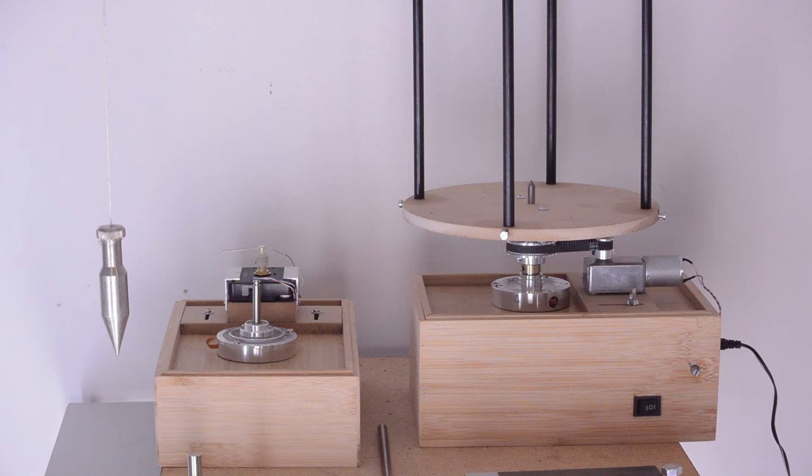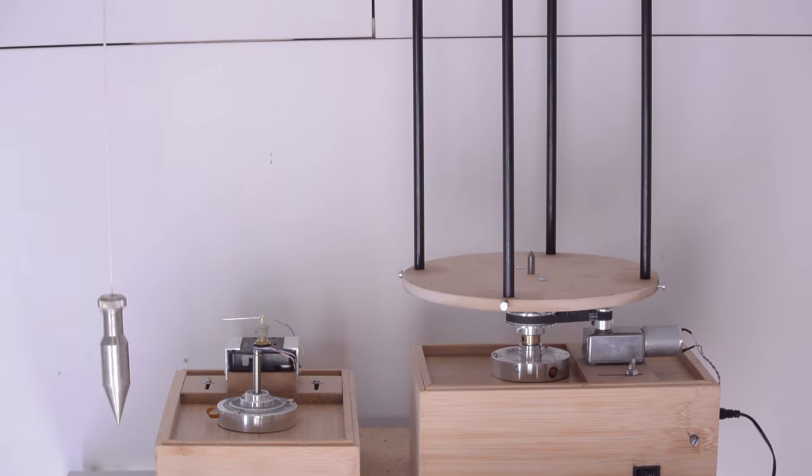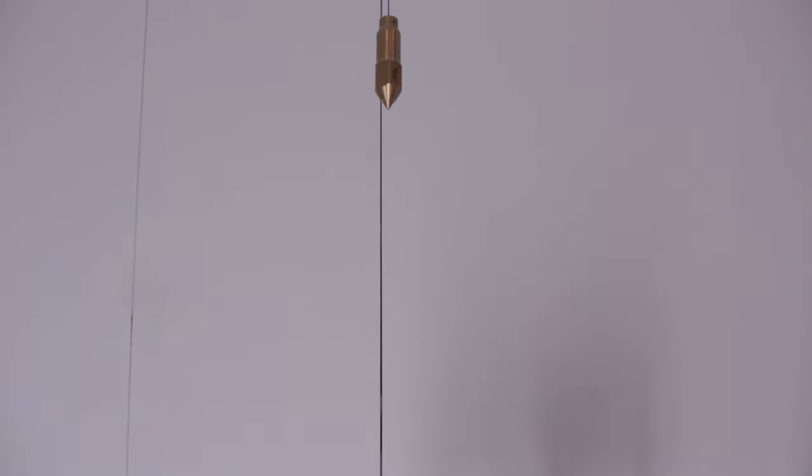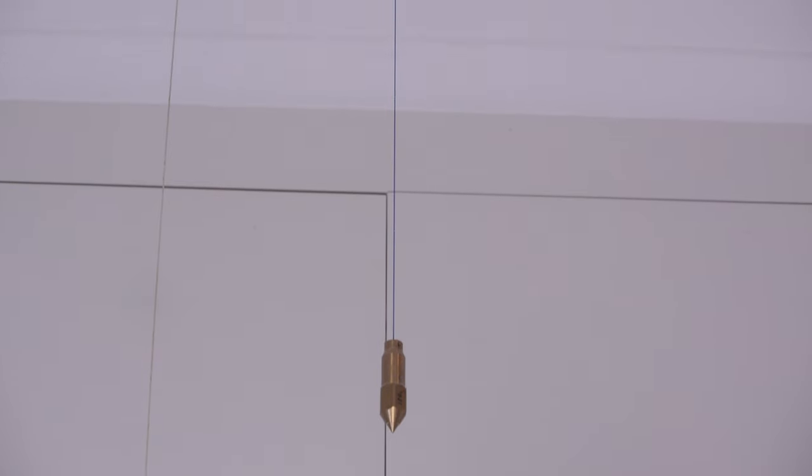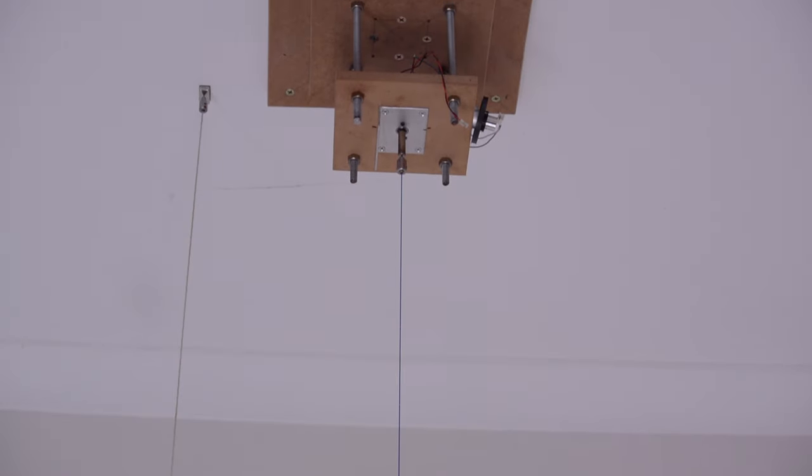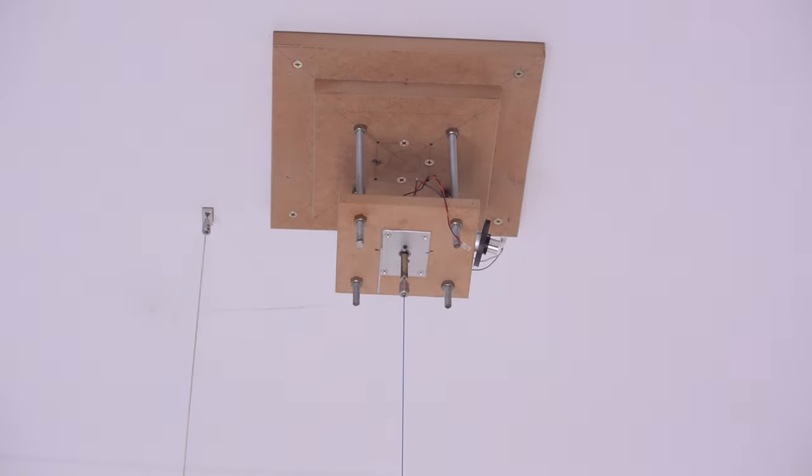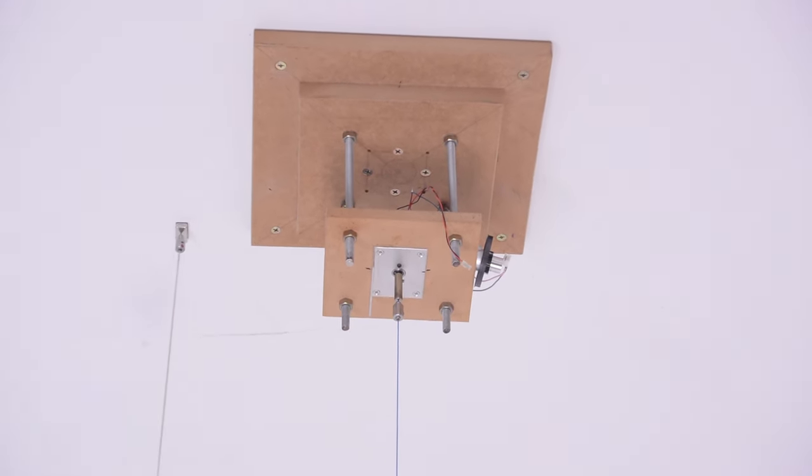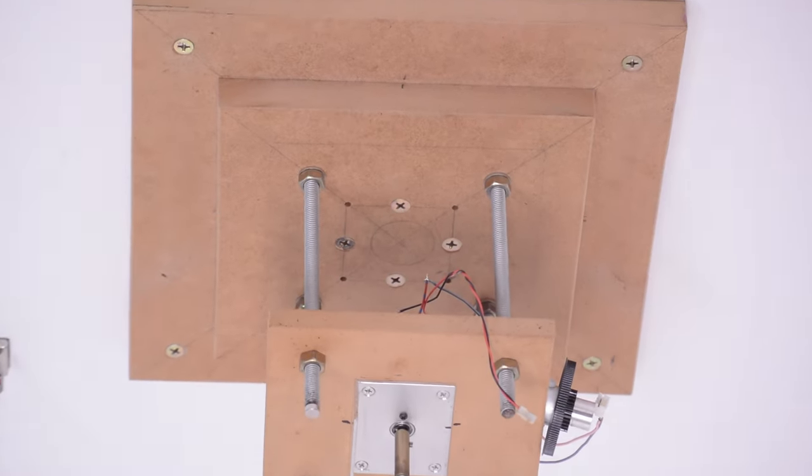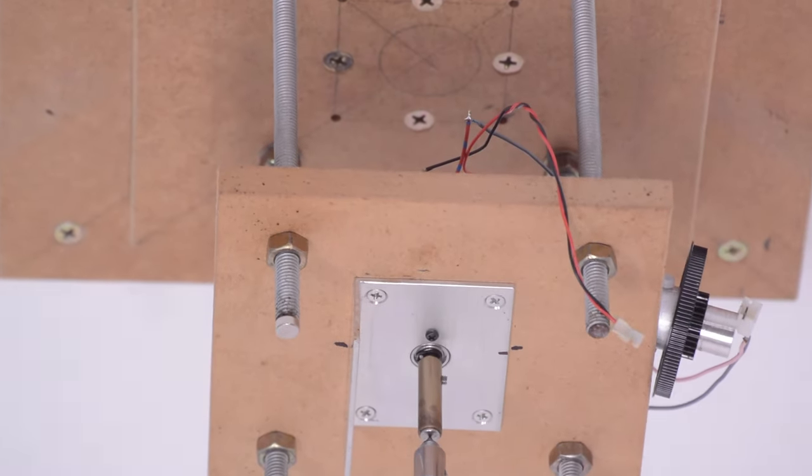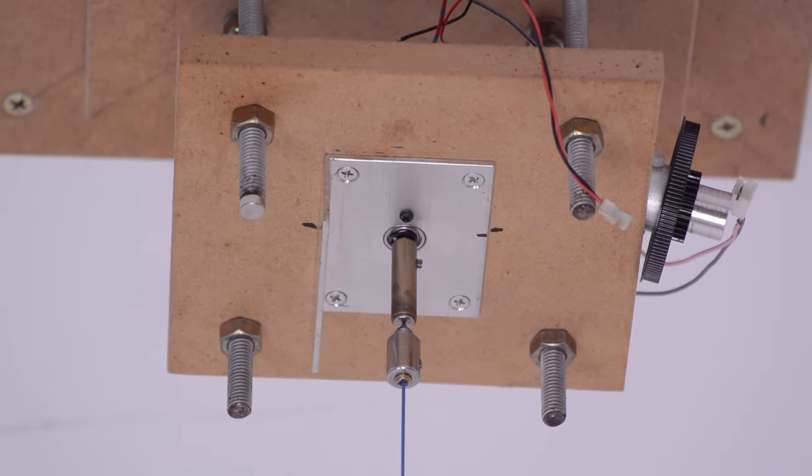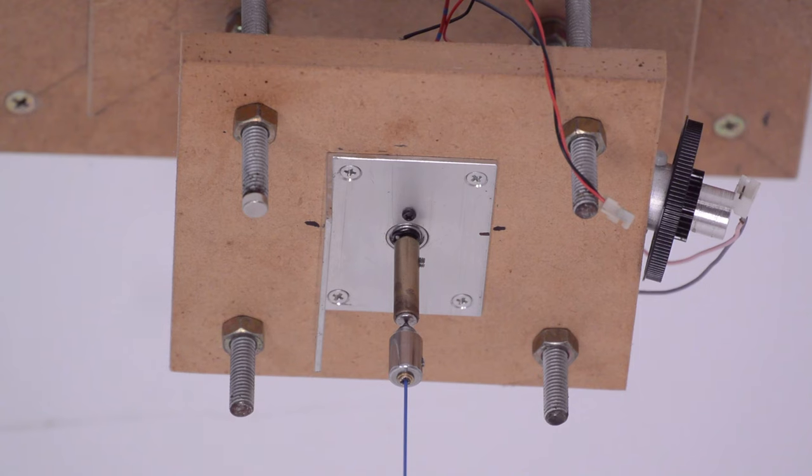Here we have the setup from video 7. Nothing's changed. On our left is our static pendulum. Zooming up the top. The only thing I've changed is I've placed the smaller pendulum onto the plumb bob tester. I'll zoom in and start spinning the plumb bob tester to give you a better idea of this slight wobble that you might see in that bearing at the top.